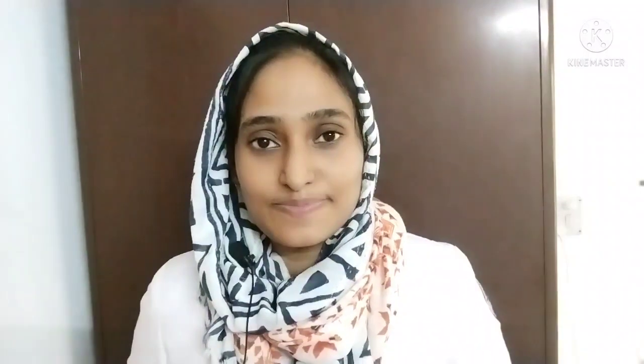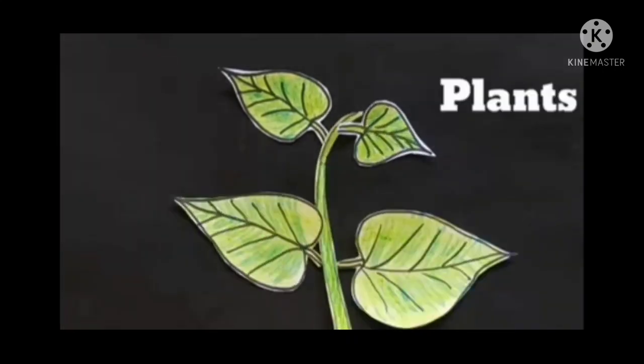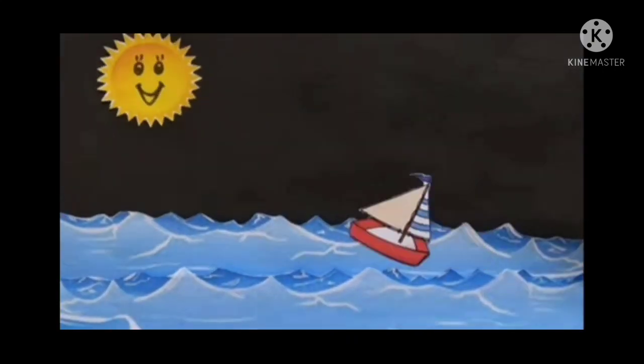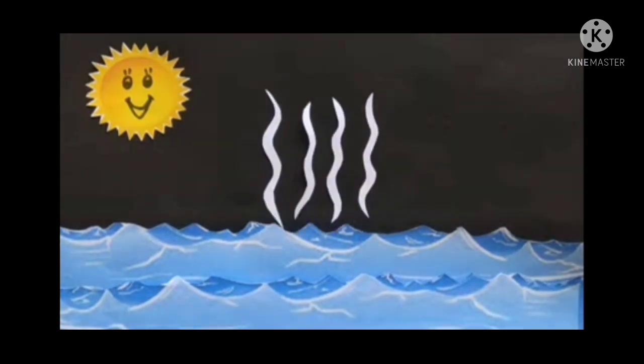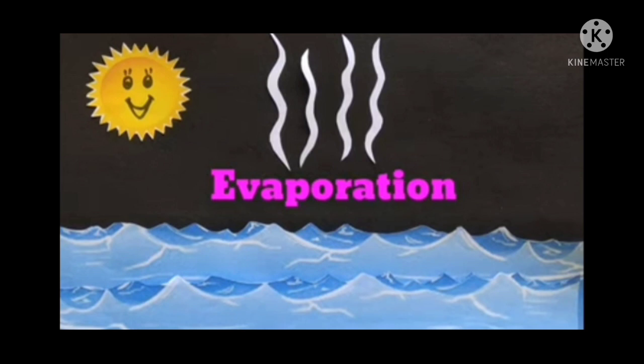Moving on to the next important topic in this chapter — the water cycle. You might have learned about the water cycle in your lower classes. The continuous journey of water in nature from earth to clouds and back to earth is called the water cycle. The water cycle consists of many processes. There is a lot of water on earth mainly in ponds, lakes, oceans, and even in plants. When the sun shines and it becomes hot, water from ponds, lakes, and oceans turns into water vapour. This process is called evaporation — that is, water turning into water vapour because of heat.